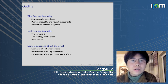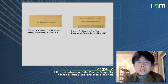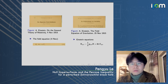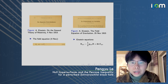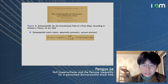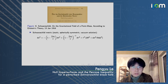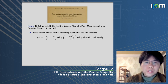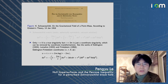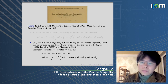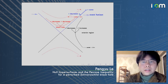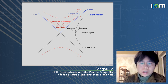Starting from some basic history: general relativity was founded in 1915 by Einstein, who wrote down the Einstein equation. Soon after, Schwarzschild derived the static spherically symmetric vacuum solution. It took people a while to fully understand this metric — the locus r equals 2m is not a singularity but an event horizon, as can be seen clearly from the Kruskal–Szekeres coordinate.